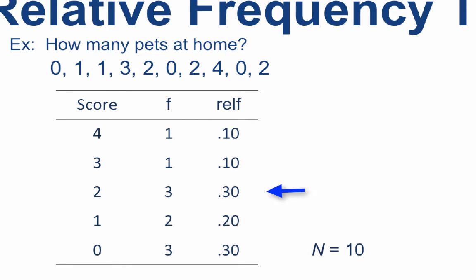The frequency of three divided by 10 is 0.30. The frequency of two divided by 10 is 0.20. And for those who have no pets at home, those three people have a relative frequency of 0.30.